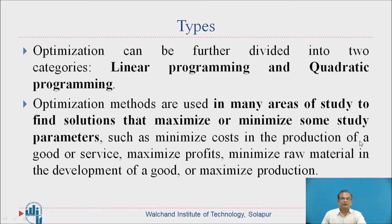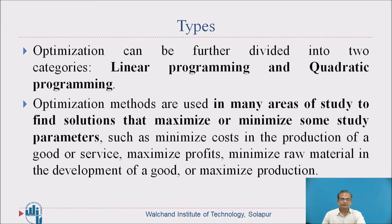Optimization can be further divided into two categories: linear programming and quadratic programming. Optimization methods are used in many areas of study to find solutions that maximize or minimize some study parameters — such as minimize costs in the production of a good or service, maximize profits, minimize raw materials in the development of a good, or maximize production.